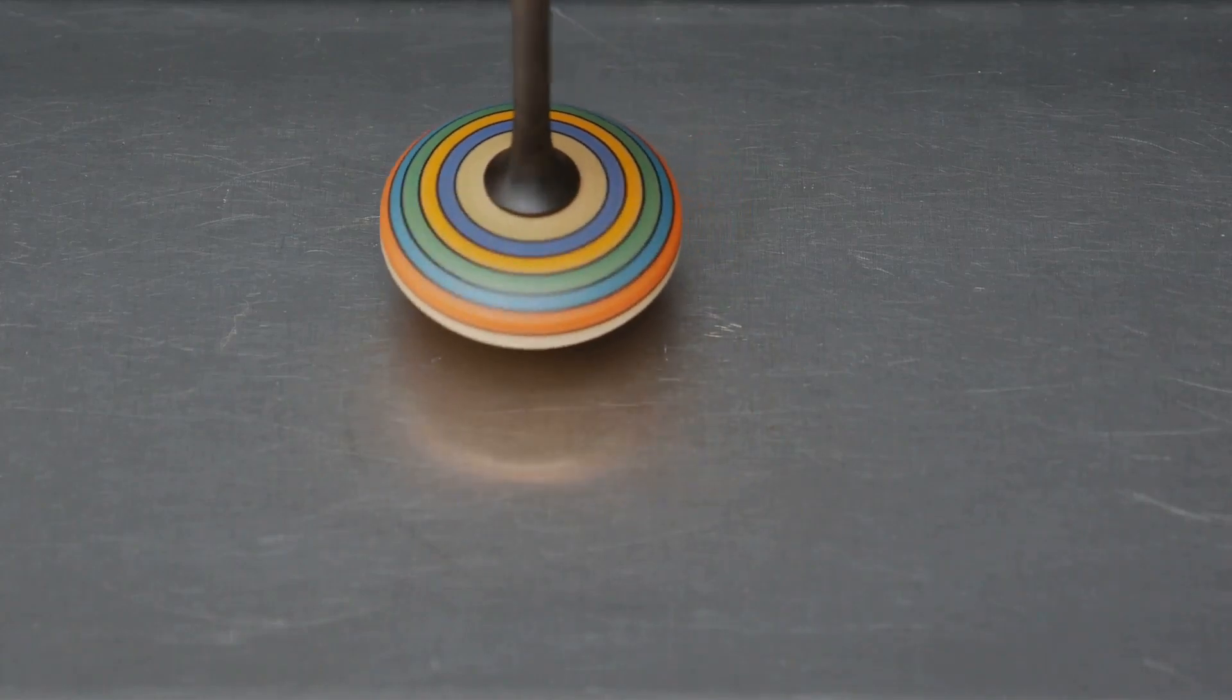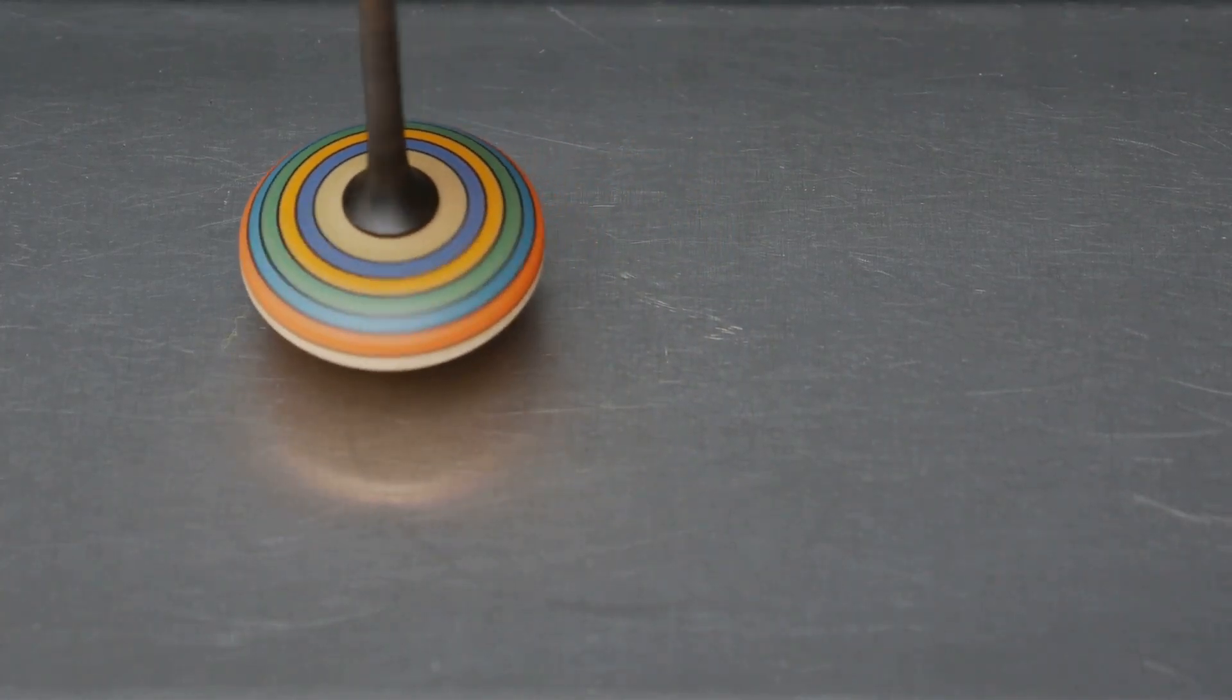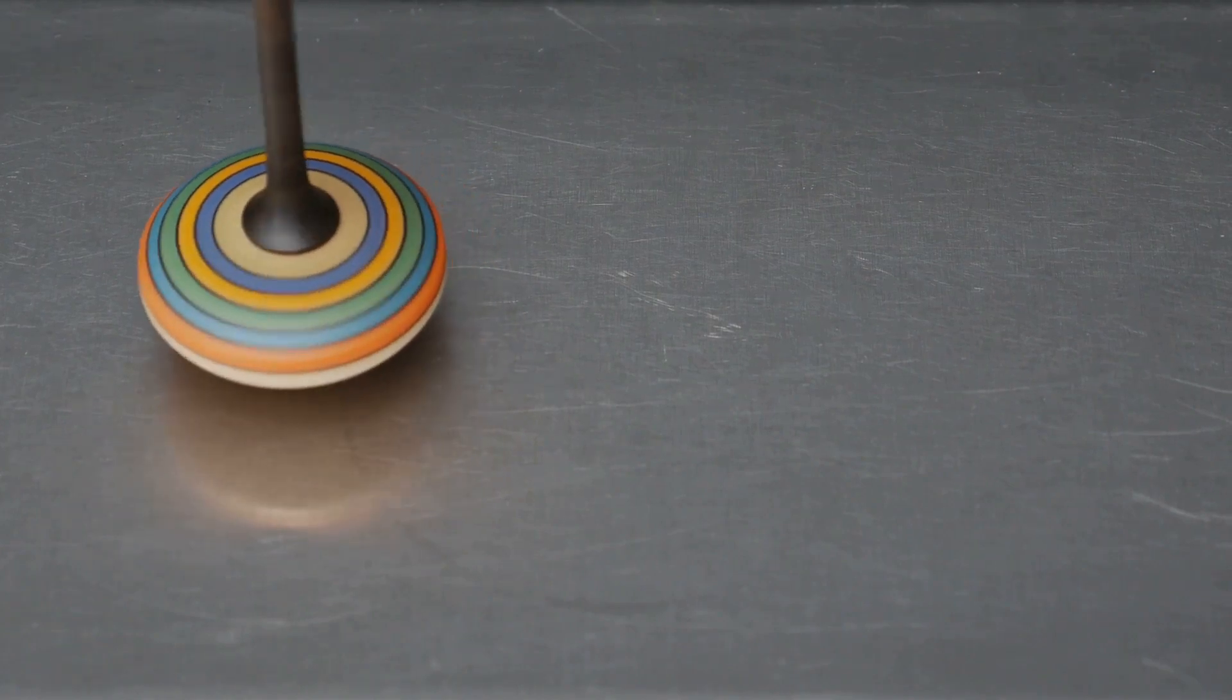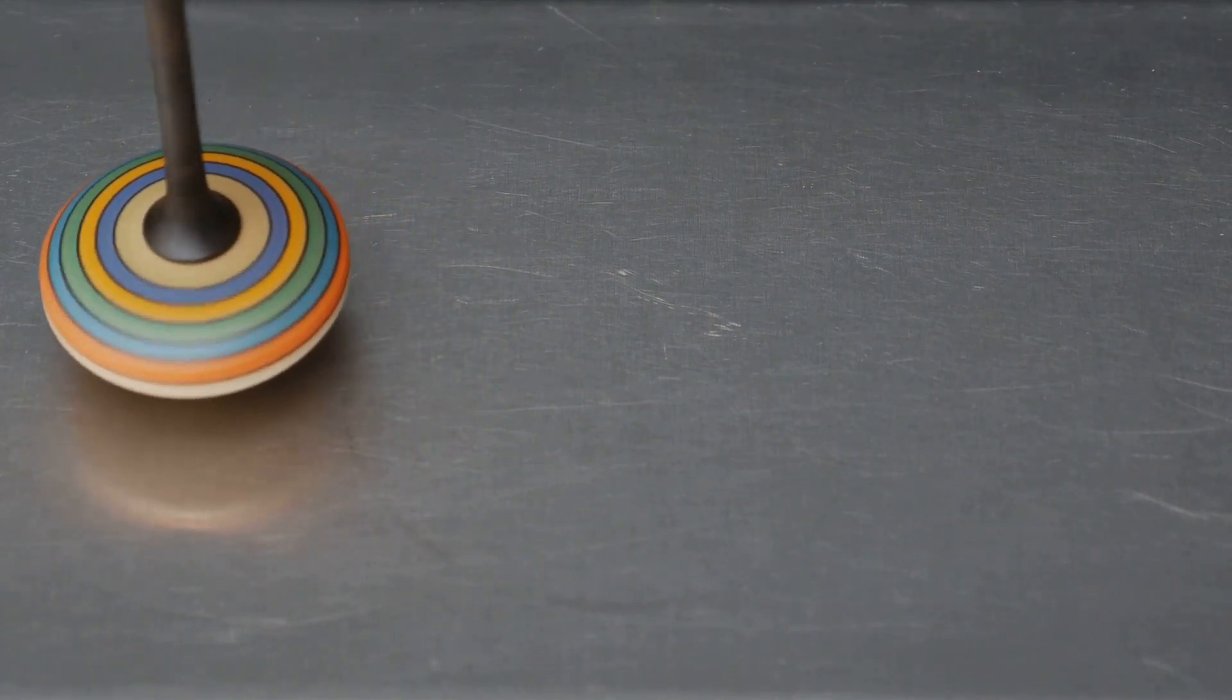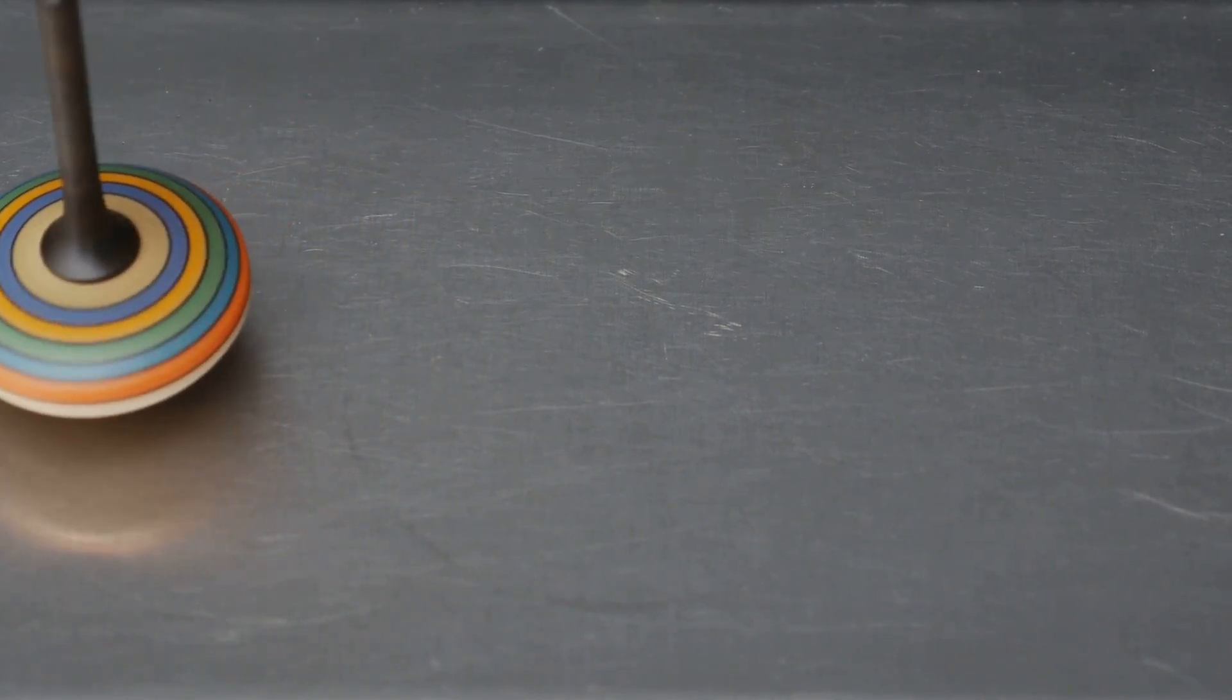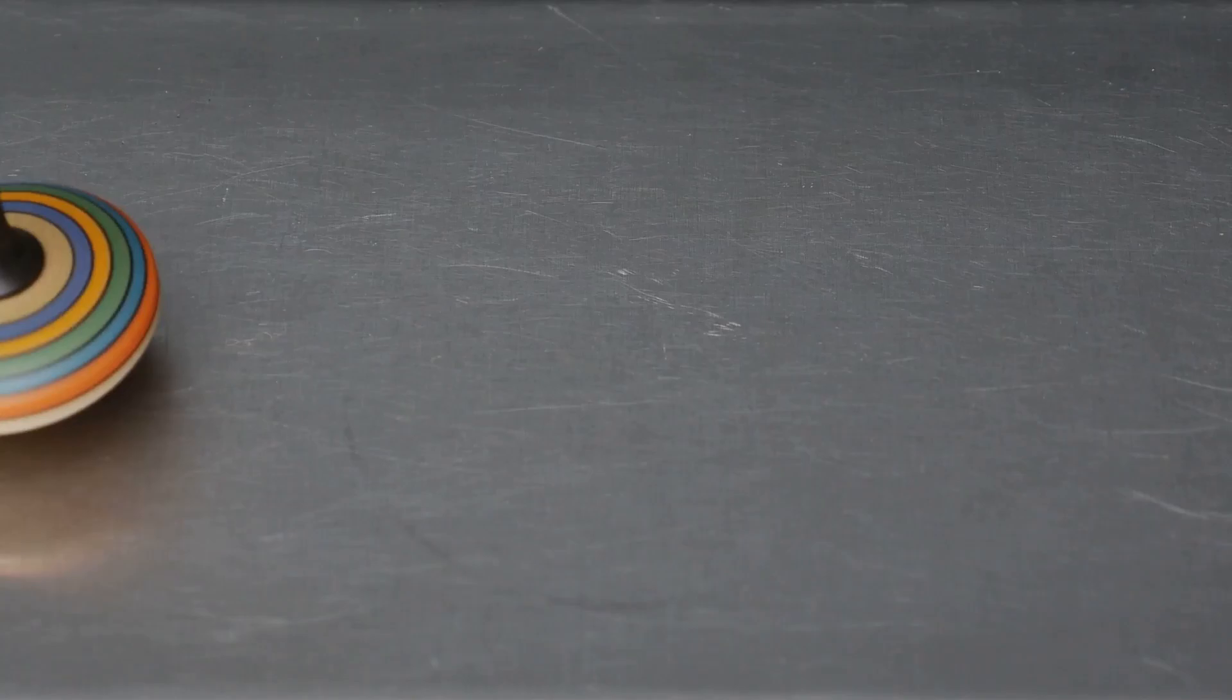Imagine tiny spinning tops, forming left-handed or right-handed spirals. Depending on the spiral's direction, you can actually switch these spins around, just by applying a small electric field.